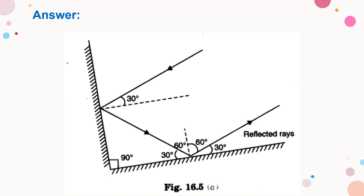We are drawing the normal at the point of incidence, which is at a complete 90 degrees. Here 90 minus 30 equals 60, so the angle of incidence is 60 degrees. Similarly, the angle of reflection is also equal to 60 by the law of reflection. So angle R is also equal to 30 degrees here. This is the reflected ray from the second mirror.